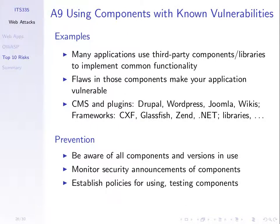Sometimes you develop a web application not from scratch but using other people's software and components. Make sure they're secure. Flaws in other people's components means your resulting web application may have flaws. Simple things: make sure you know which components you're using, the versions, and that they're up to date. When there are security announcements that a component you're using has a flaw, do something about it. Monitor security announcements and upgrade where necessary to avoid using insecure software.